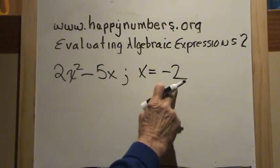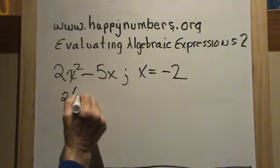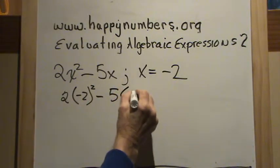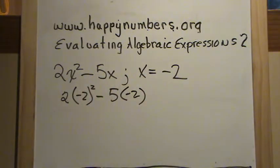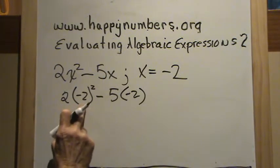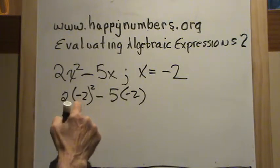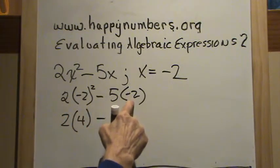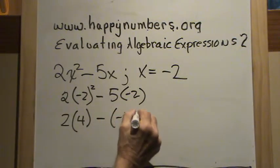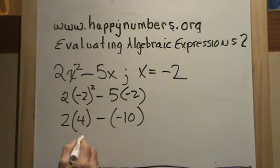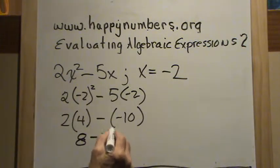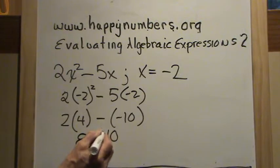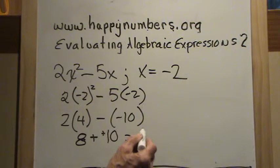First we start by substituting: we have 2 times negative 2 to the second power, minus 5 times negative 2. First, do the exponent: negative 2 squared is negative 2 times negative 2, which is positive 4. Then 5 times negative 2 gives negative 10. Now do the multiplication: 2 times 4 is 8, minus a negative 10. Subtracting integers means we add the opposite, so this becomes 8 plus 10, which is 18.